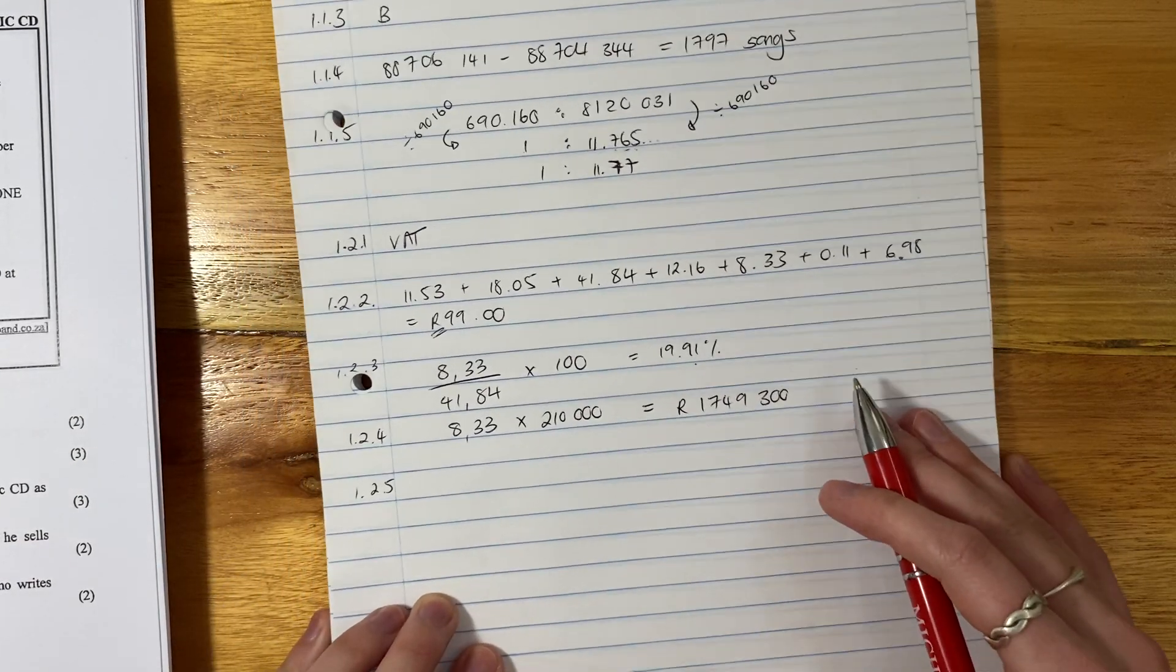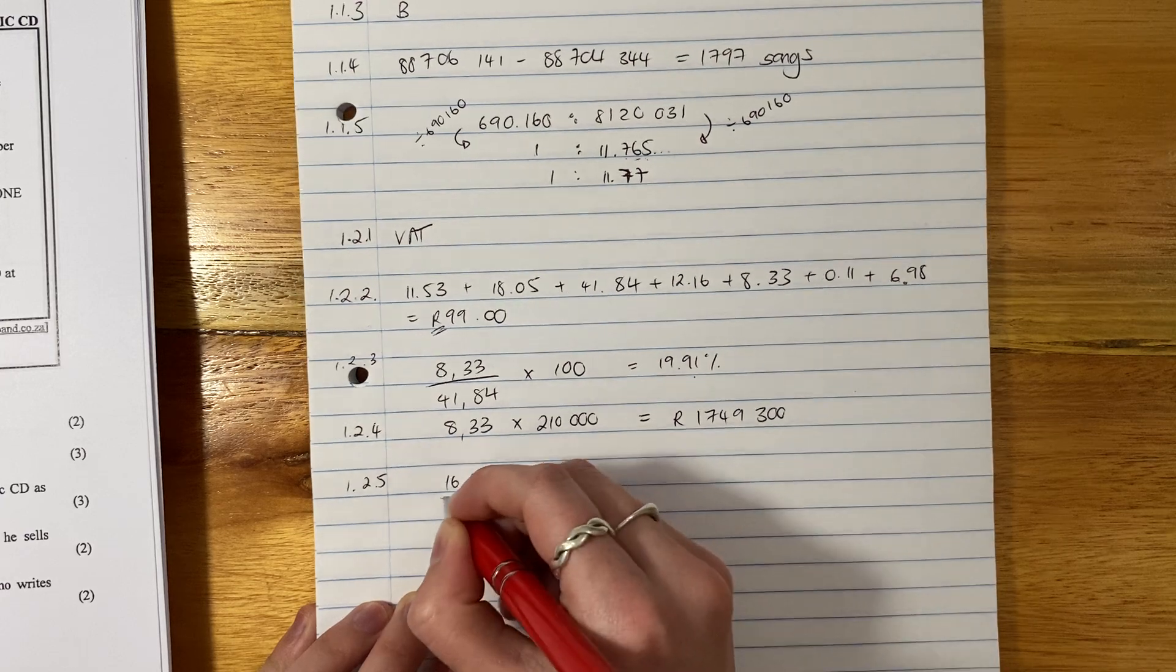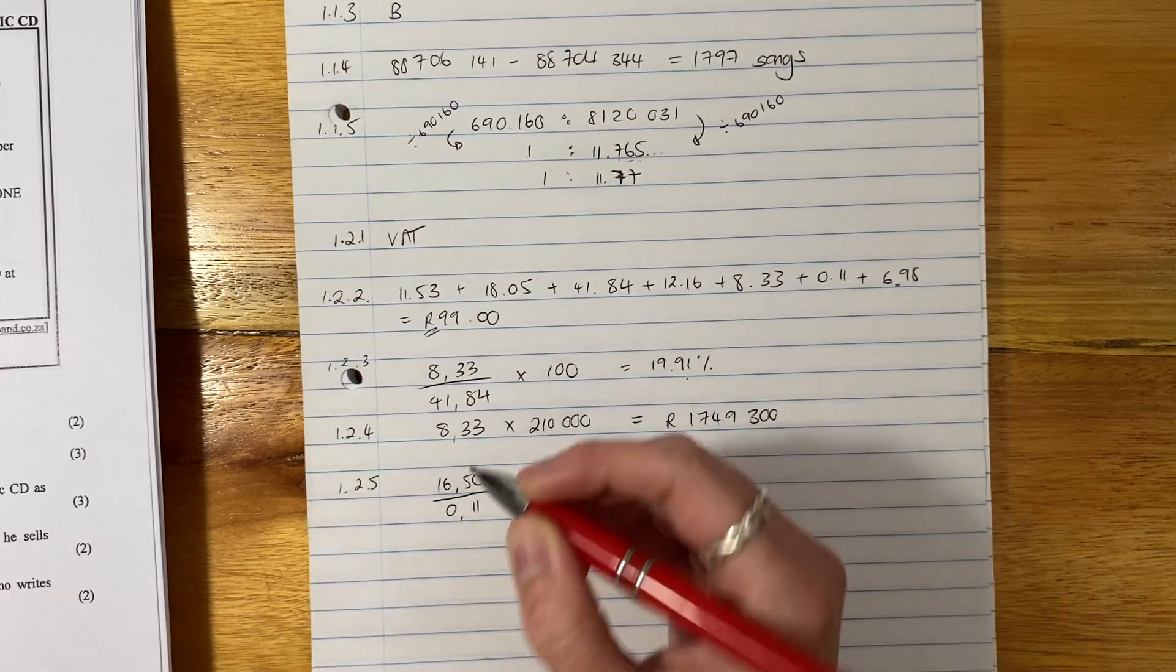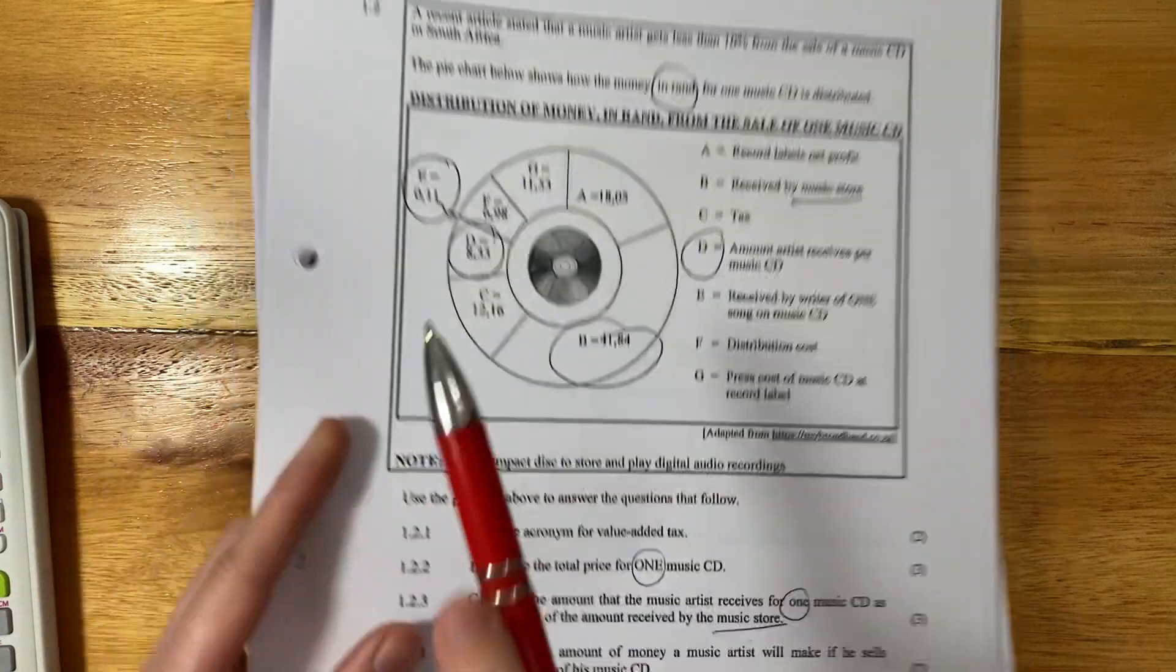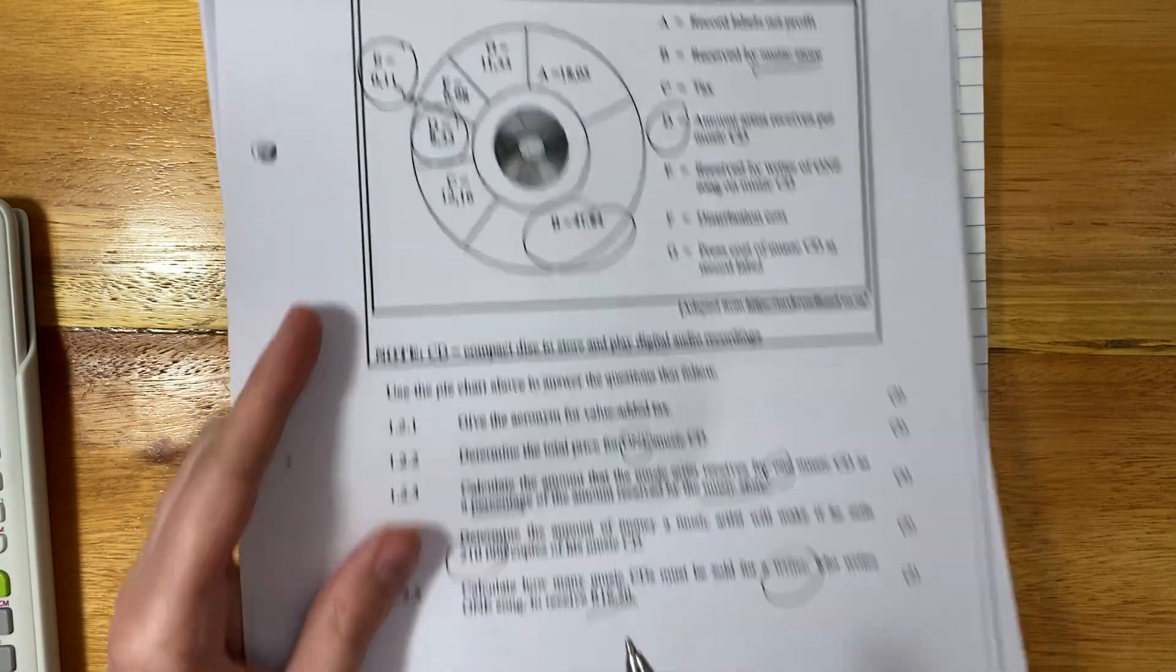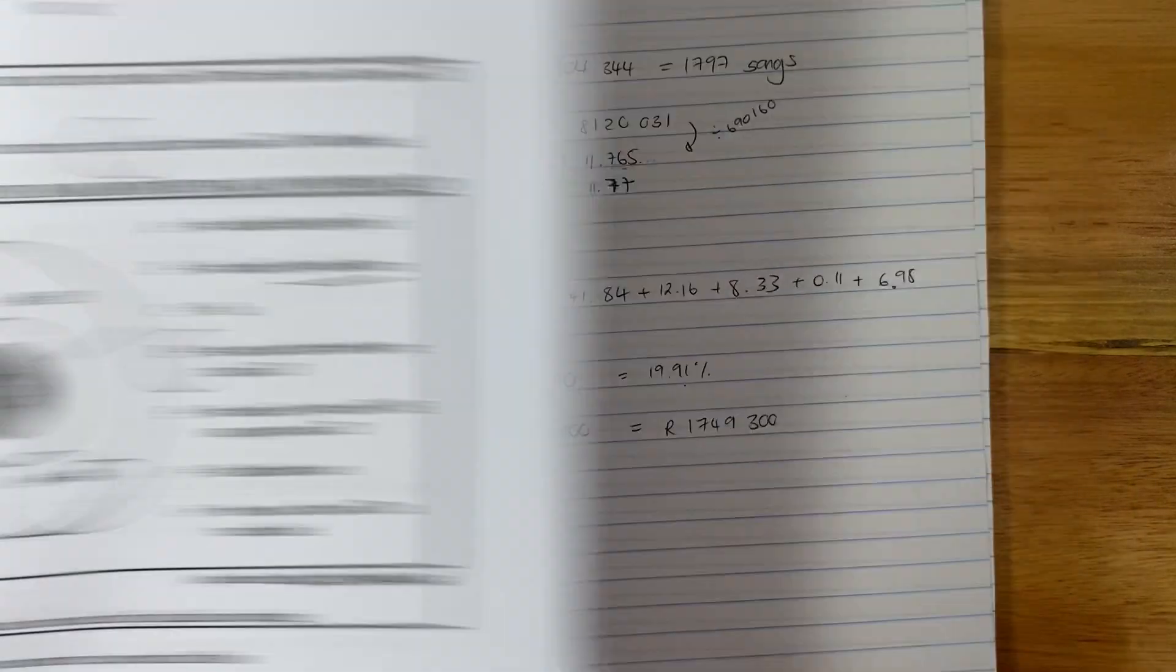So you say, well, I'm going to say 16 rand 50, and I'm going to divide that by 0.11. Because I'm basically saying, how much do they get in total divided by how much do they get per unit? Because if you do that, it will just give you the number of units, the number of CDs. So we're going to pop that into our calculator.